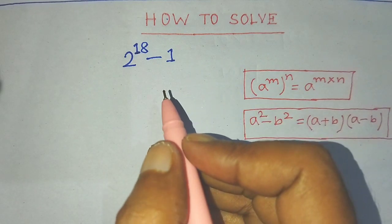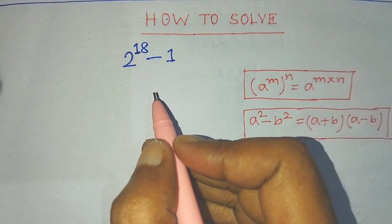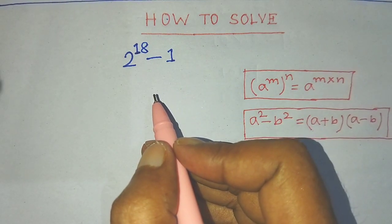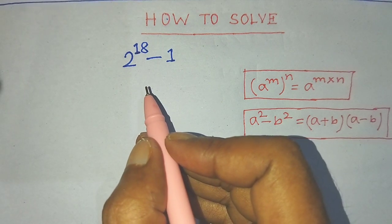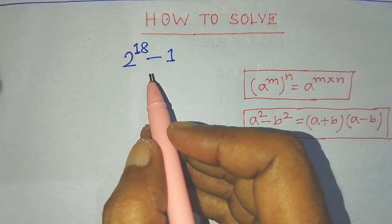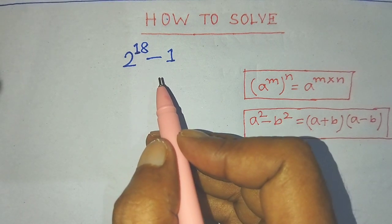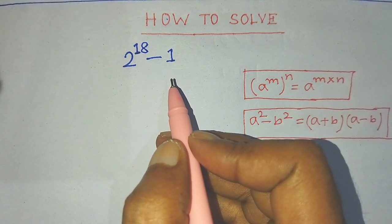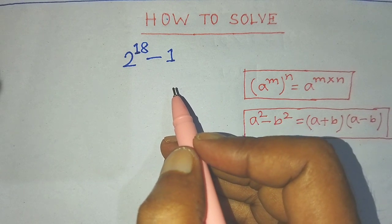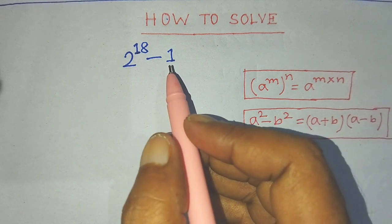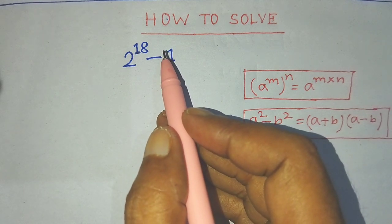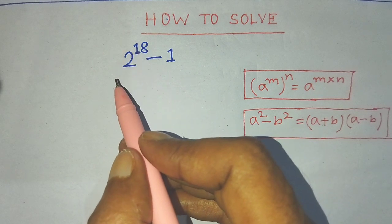Hi guys, welcome back to my channel, All in Mass Blog. Today our question is 2 to the power 18 minus 1. In this video, I will tell you how to simplify this exponential form.